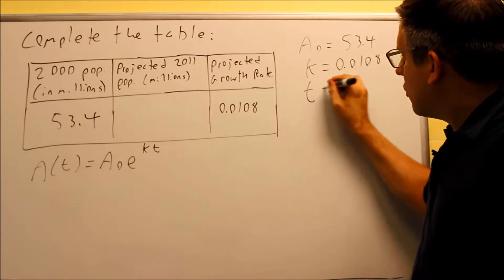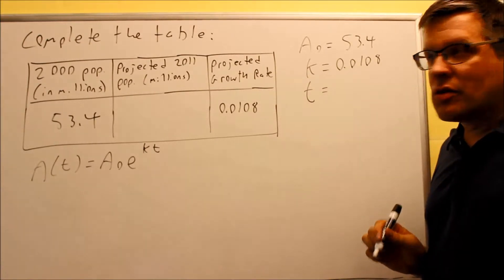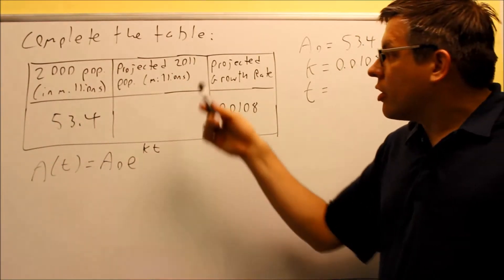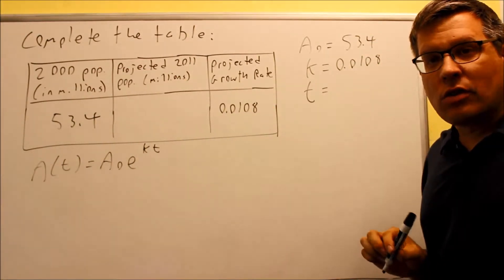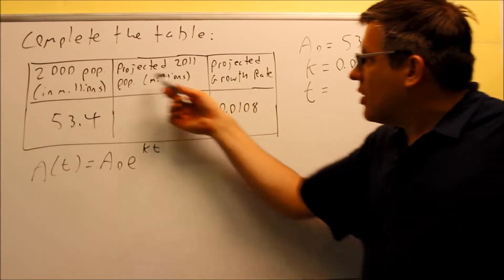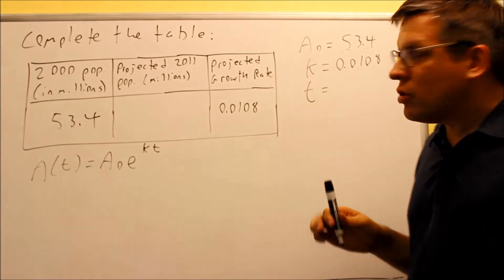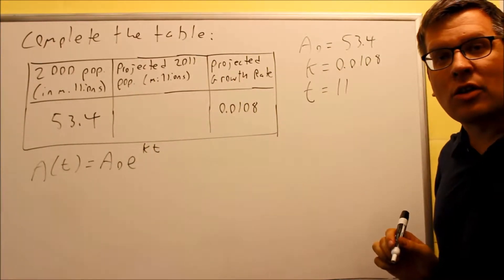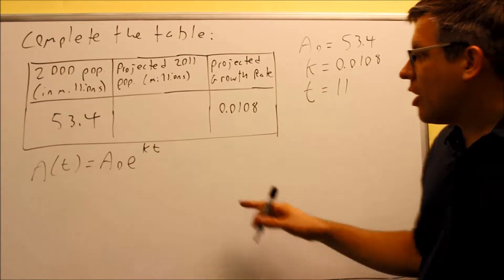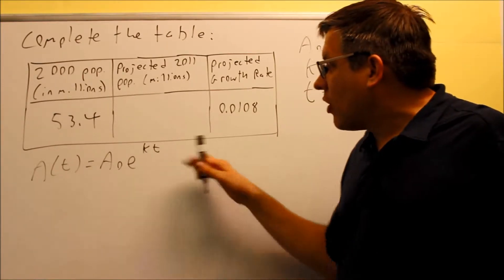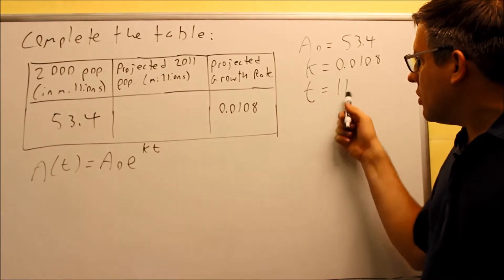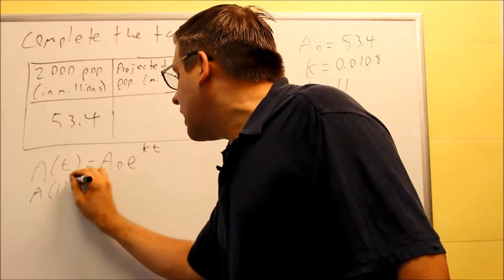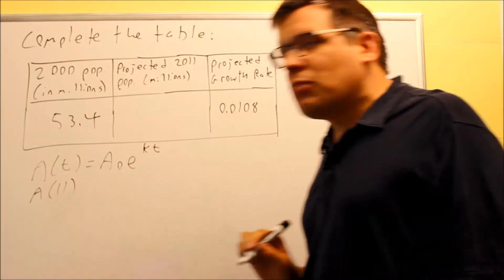We also know what the t value is. If you're starting from 2000 and going to 2011, there's an 11-year difference, which means our time is going to be 11. So we actually have all the information we need — t is 11, so I want to find A(11).